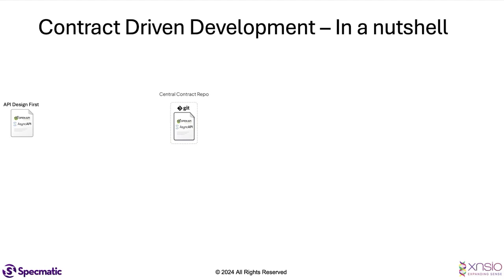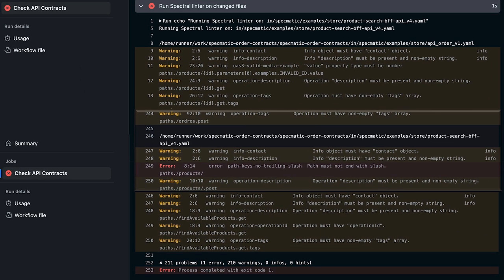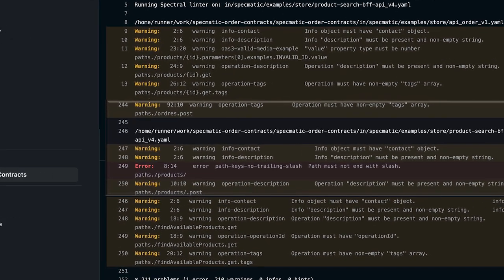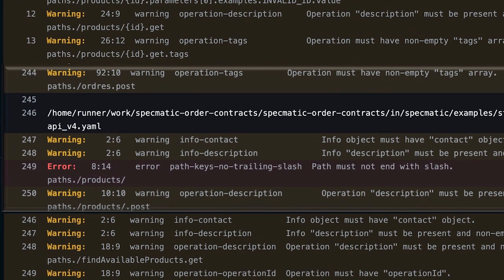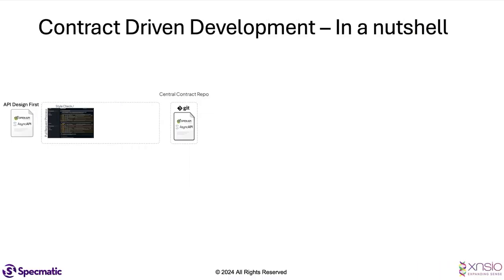To get into a central contract repo, we would go through a standard pull request process that all developers, testers, and engineers are familiar with. This is how they generally collaborate, so we want to use the same approach for collaborating on contracts as well. Just like with code, we would have a static analyzer and a linter that would do checks for consistency and standards — we would do that same for the specification as well.